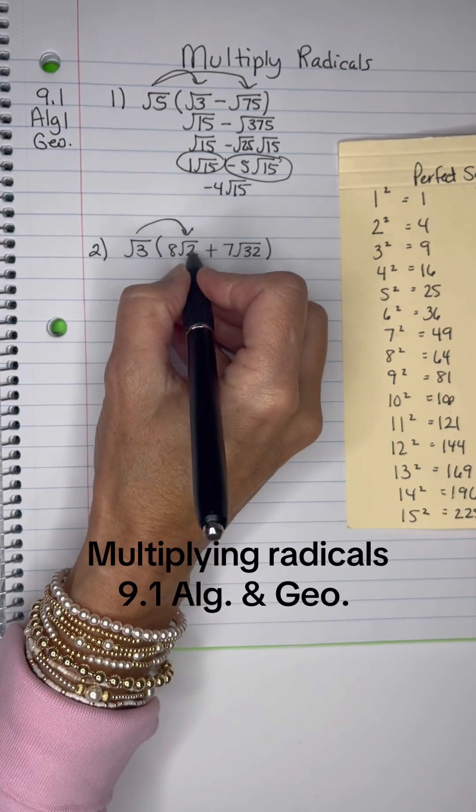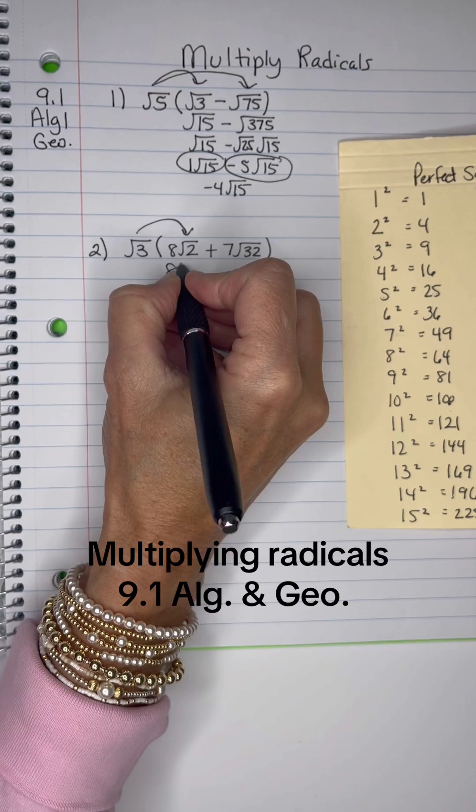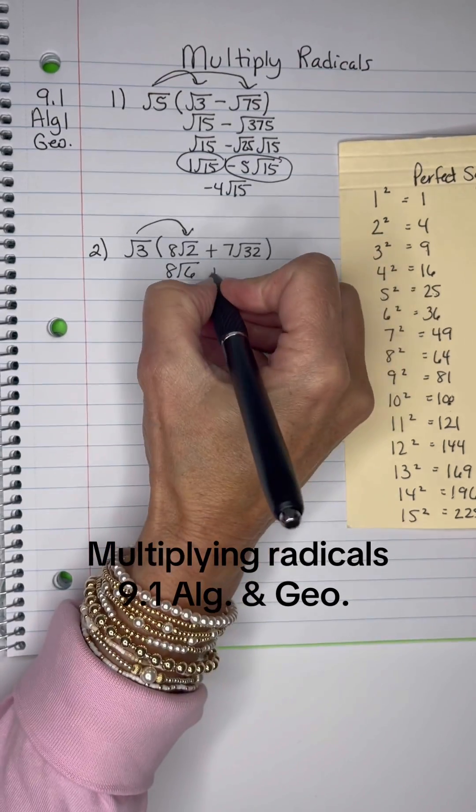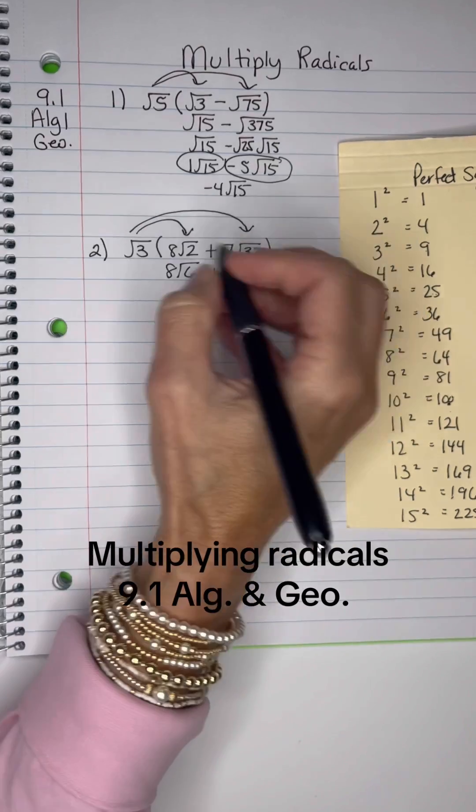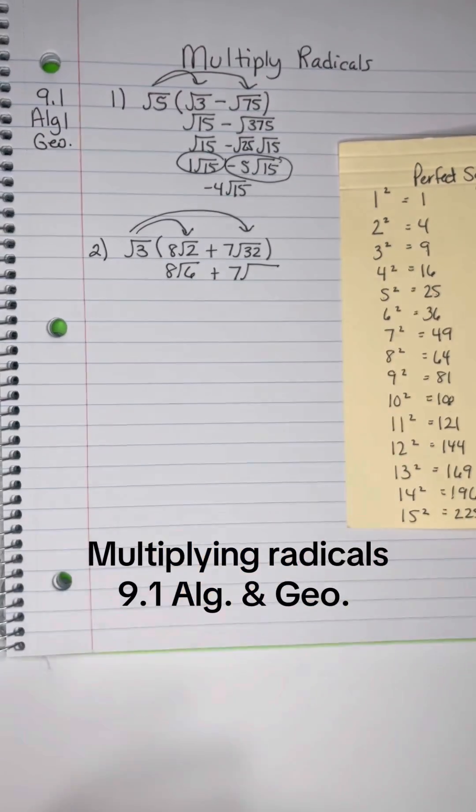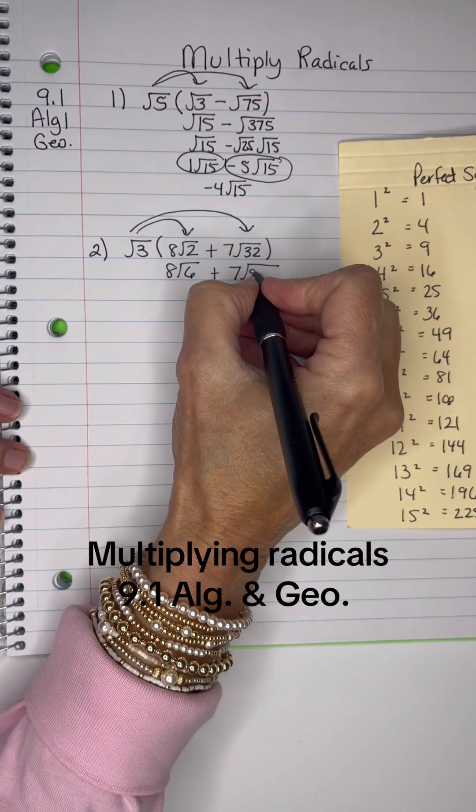1 times 8 is 8, and 3 times 2 is 6. So here I'm going to have 8 root 6, plus we have to multiply this together. 7 times 1 is 7, and 32 times 3 would be 96, I believe.